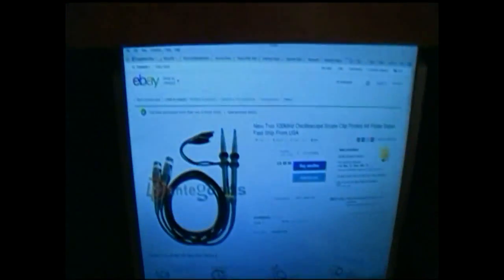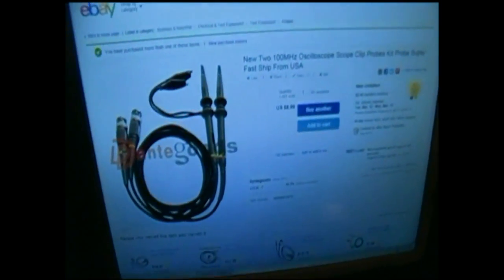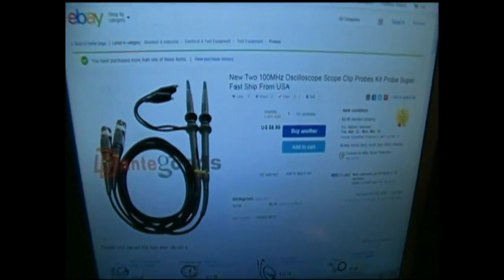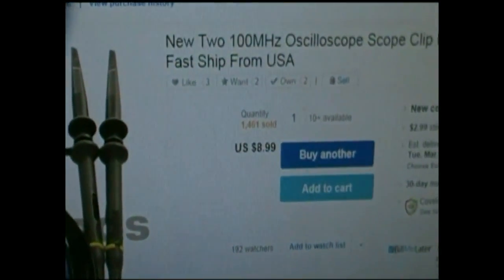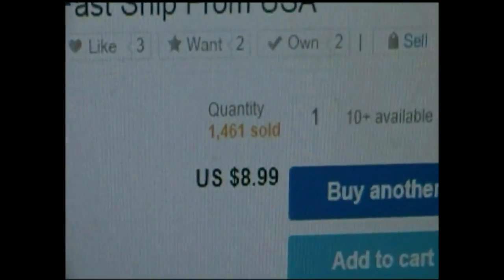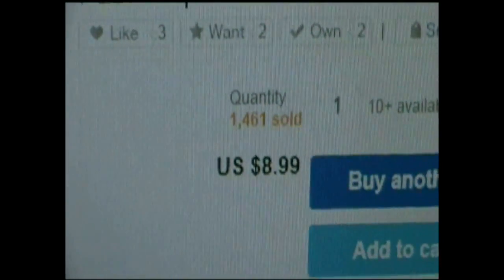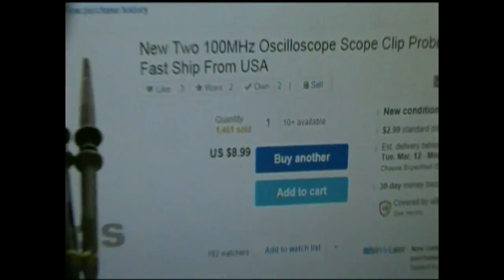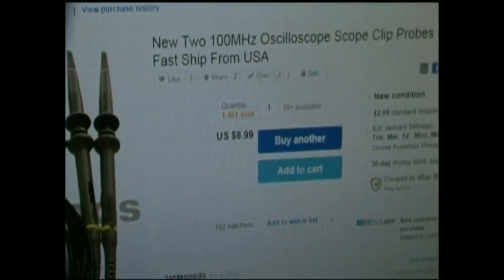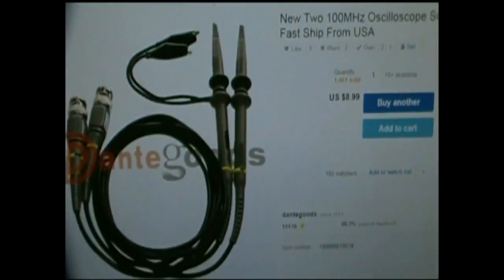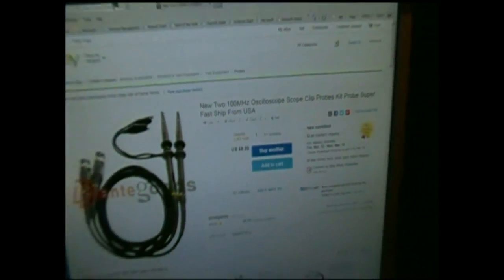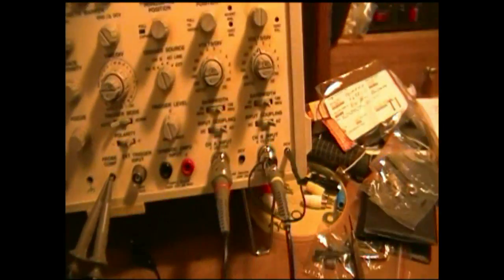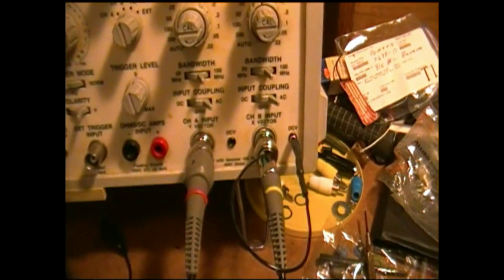One of the first things I did was I ordered some 100 megahertz probes. You may notice right there that you get two probes for $8.99. The reason it says buy another rather than buy now is because I've already bought actually four of these probes. Two of them are connected to this oscilloscope.